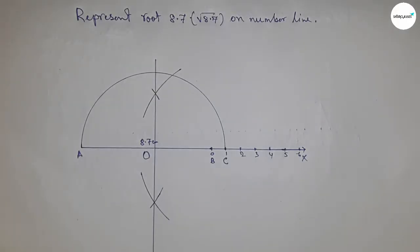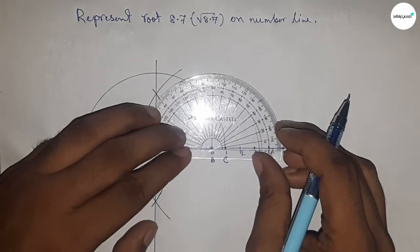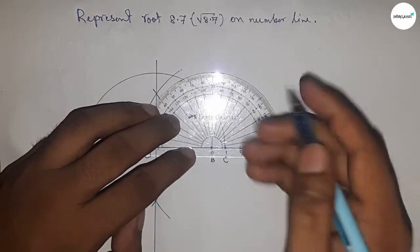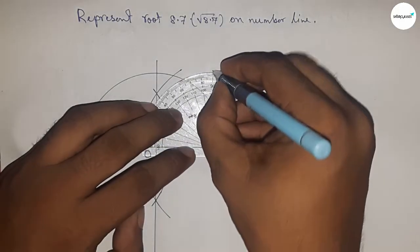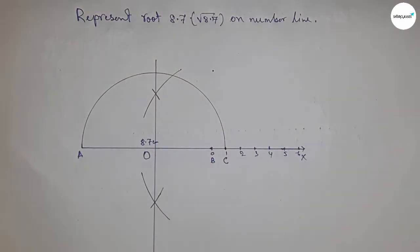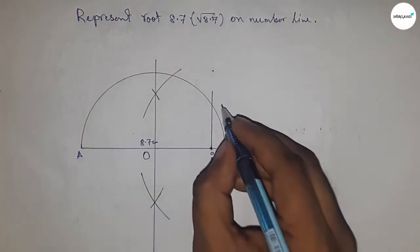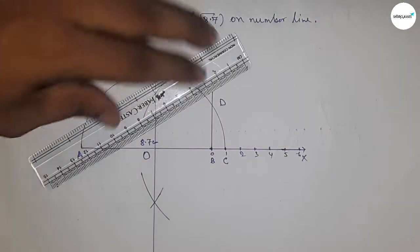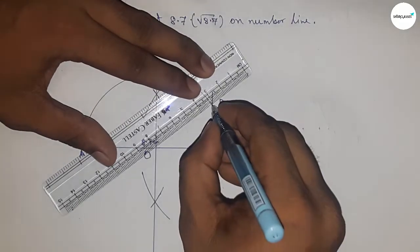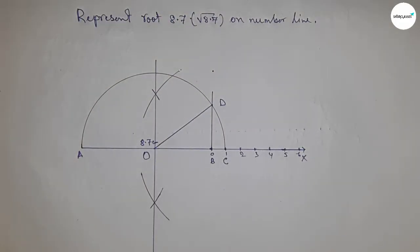Next, draw a 90-degree angle at point B using a protractor. Join this line which meets the semicircle at point D. Now join O and D.